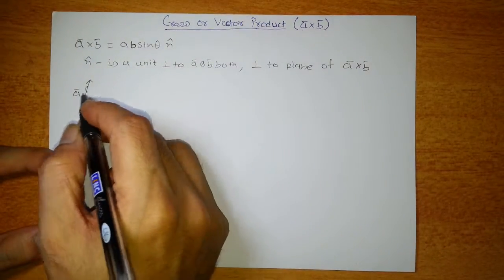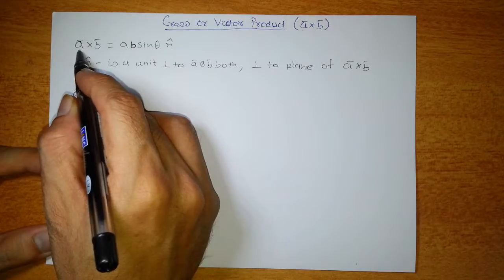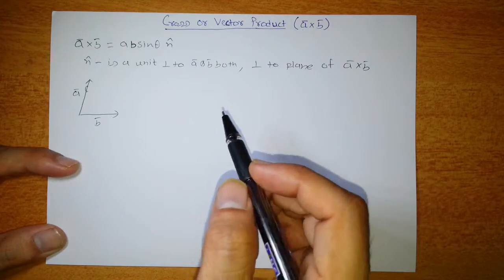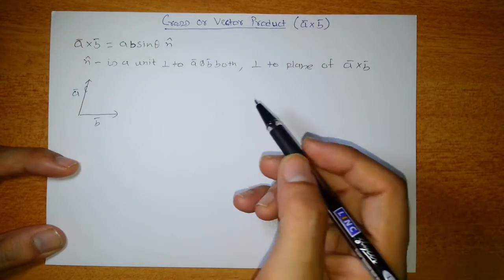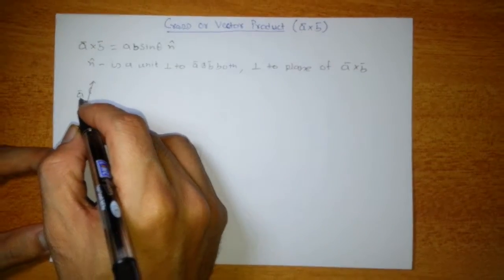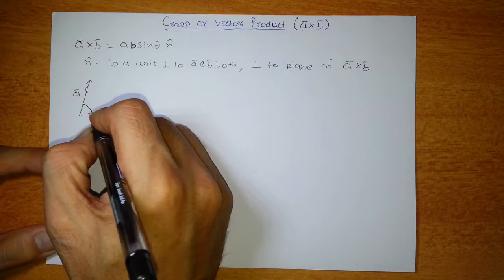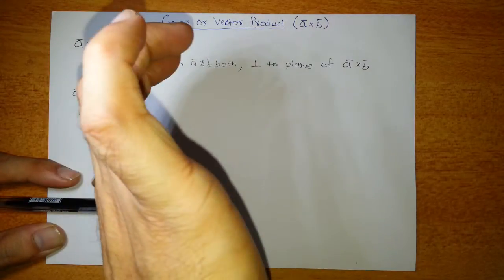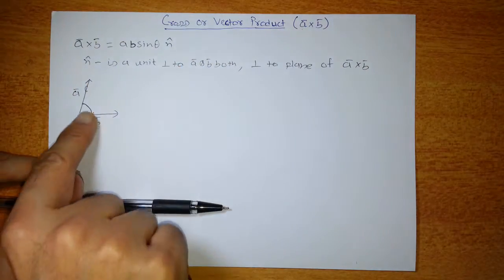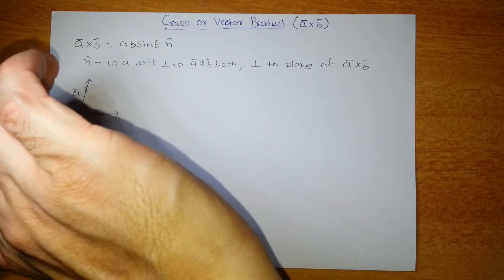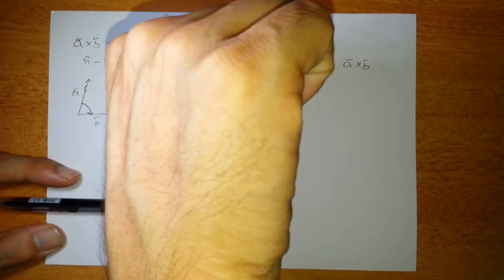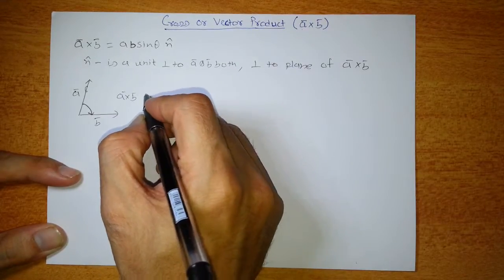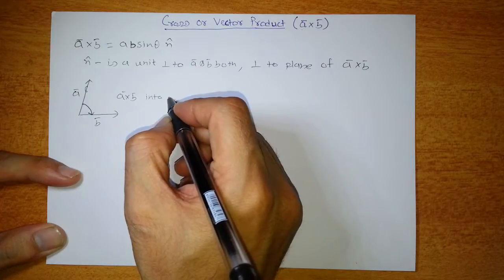The direction of the cross product is perpendicular to the plane containing A and B. A is called the first vector and B is called the second vector. To find the direction, move from A to B by the shorter path. Look at my hand — this is vector A and this is vector B. When we move vector A towards vector B, the thumb points in the downward direction, so A cross B is directed into the plane of paper.